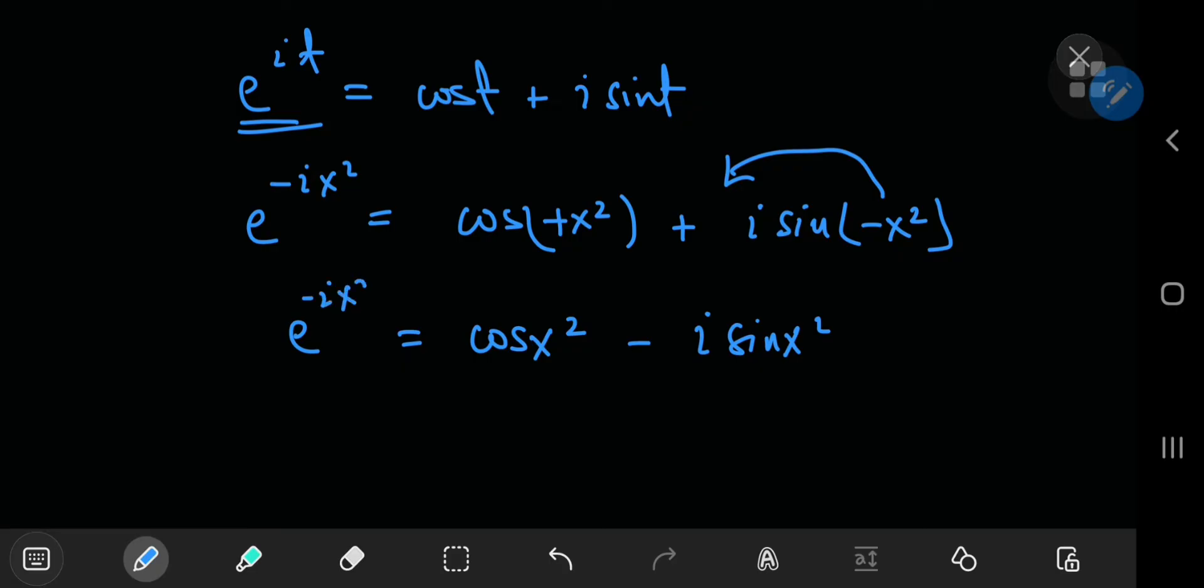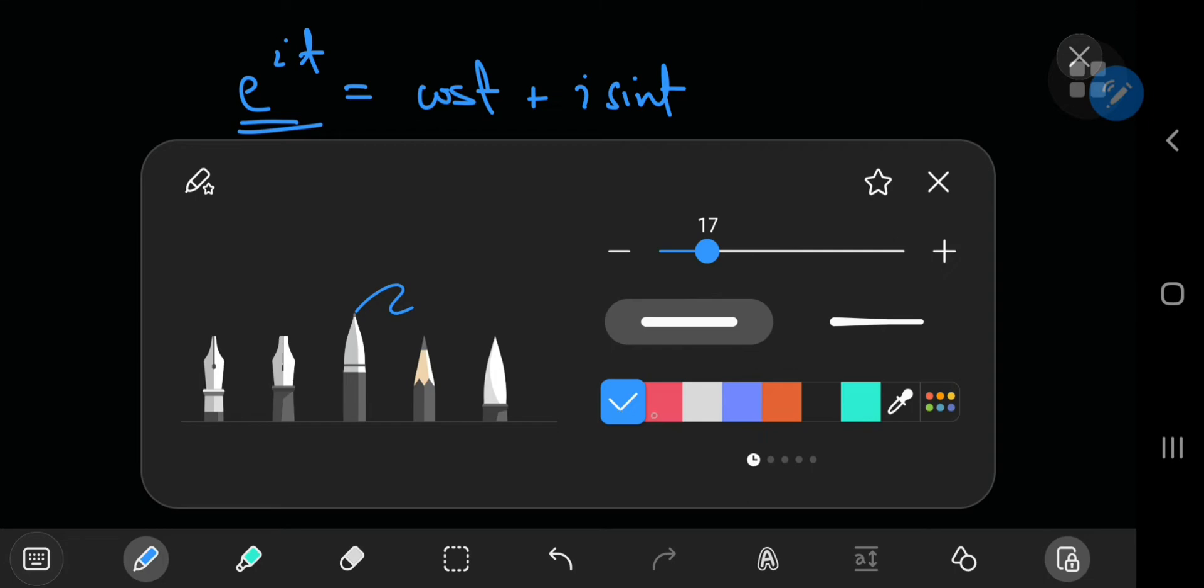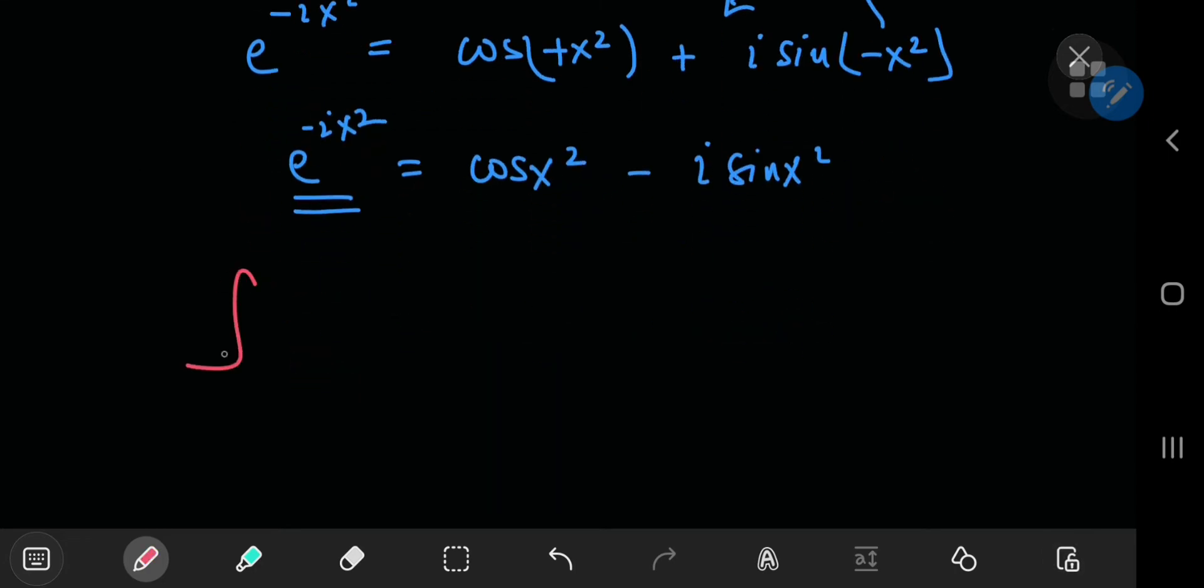Our primary interest is the left hand side. So you may have noticed by now that if we integrate e^(-ix^2) from zero to positive infinity, then the two integrals on the right hand side are in fact the Fresnel integrals I introduced earlier.